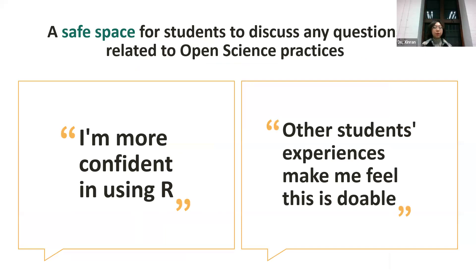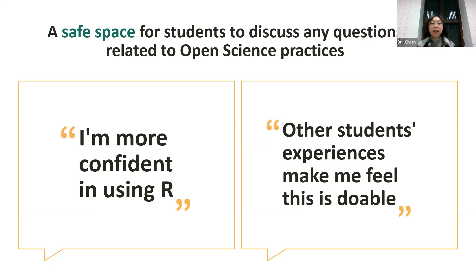After running this journal club for a while, some students gave us really positive feedback. One student mentioned they're more confident using R now — before it seemed so complex, but doing it with peers gives a lot of confidence. Others said that when they saw other students' examples of doing pre-registration or pre-prints, they felt it was something they could do in their own research too. This kind of achieves our original aim: to create a safe space for students to discuss any questions related to open science in their own research.